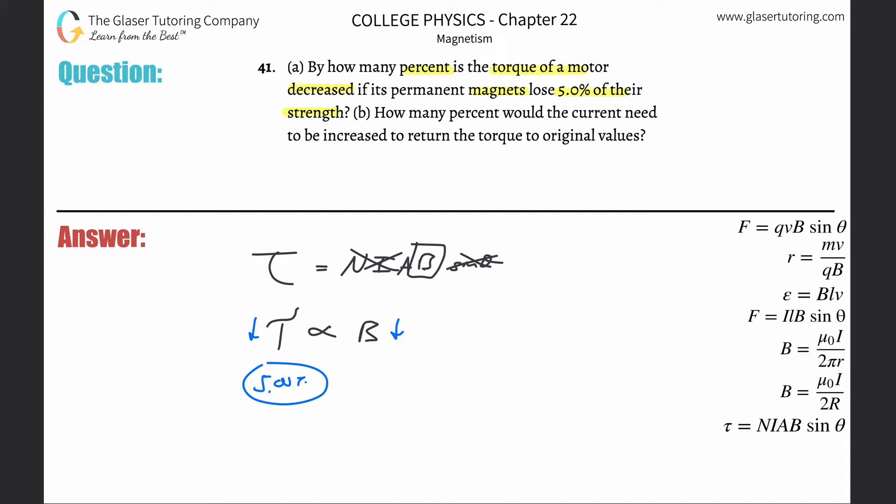Now, letter B: how many percent will the current need to be increased to return the torque to its original values? All right, so to answer this question, let's make some assumptions. Let's assume the original magnetic field was 100.